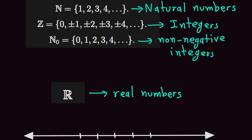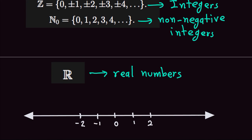We might talk about the real numbers from time to time. If you took college algebra, you have an idea what the real numbers are. The real numbers are in one-to-one correspondence with the points of the real line. For example, pi is a real number, all natural numbers are real numbers, e is a real number, and the square root of 2 is also a real number.